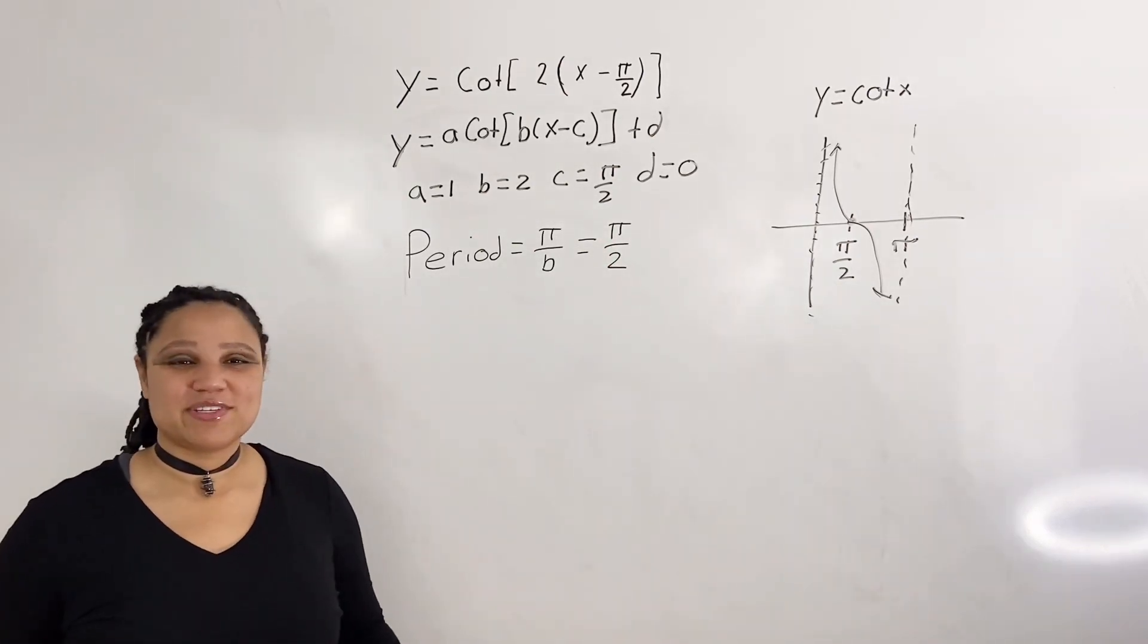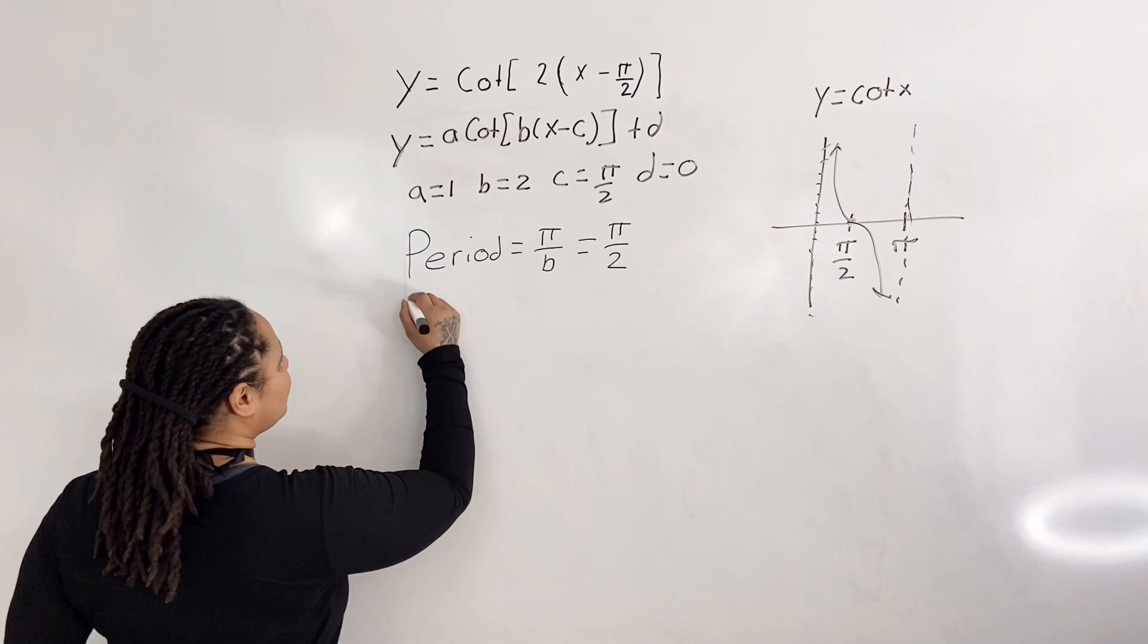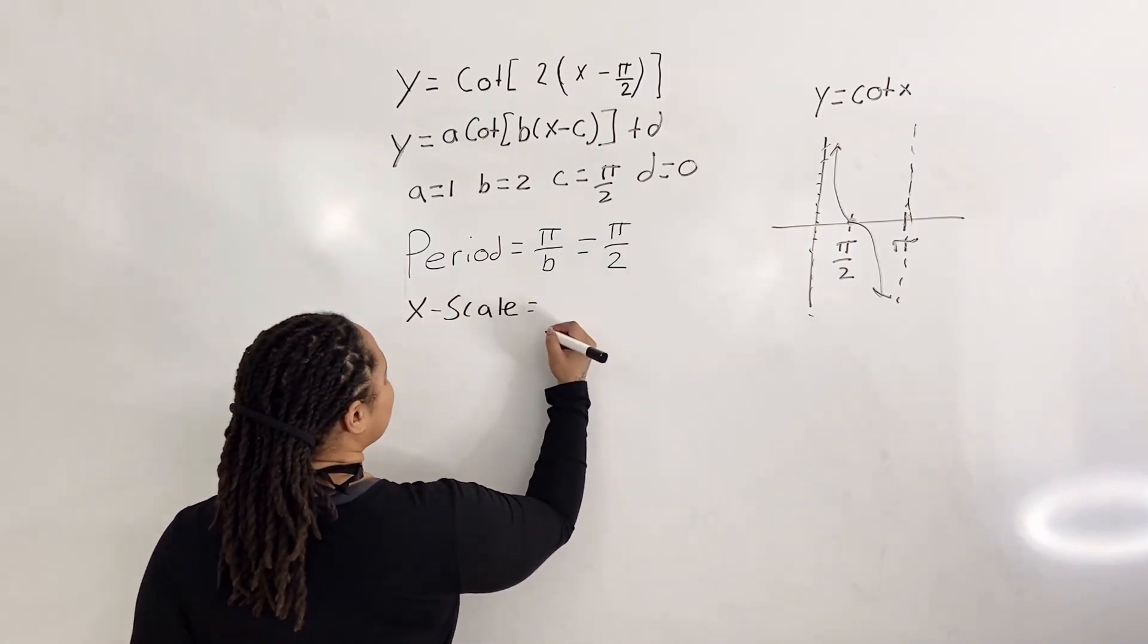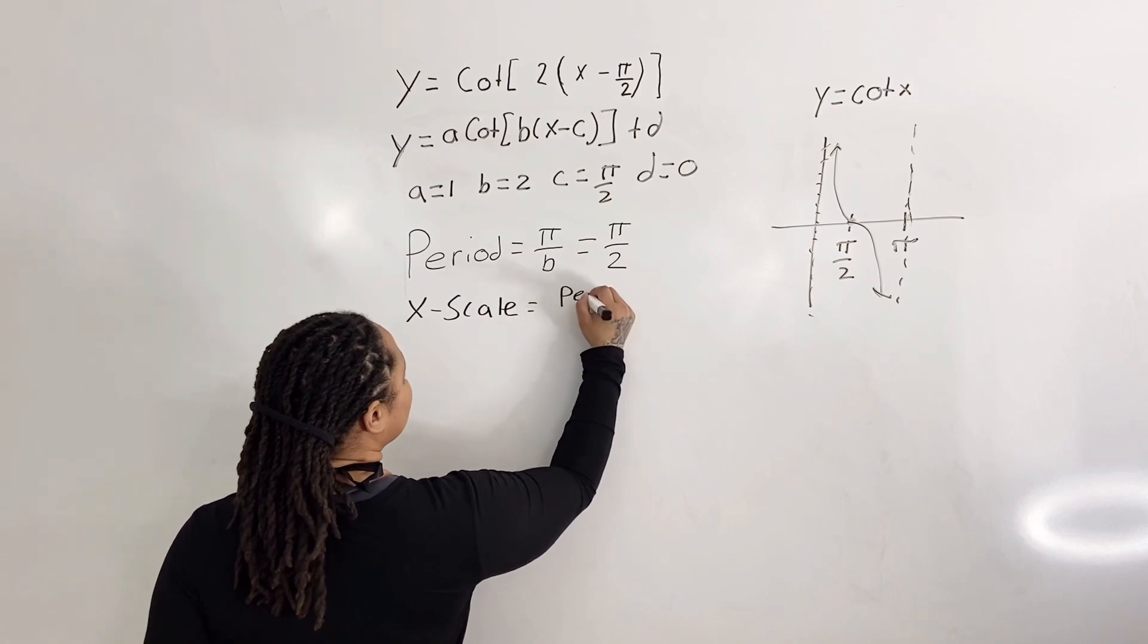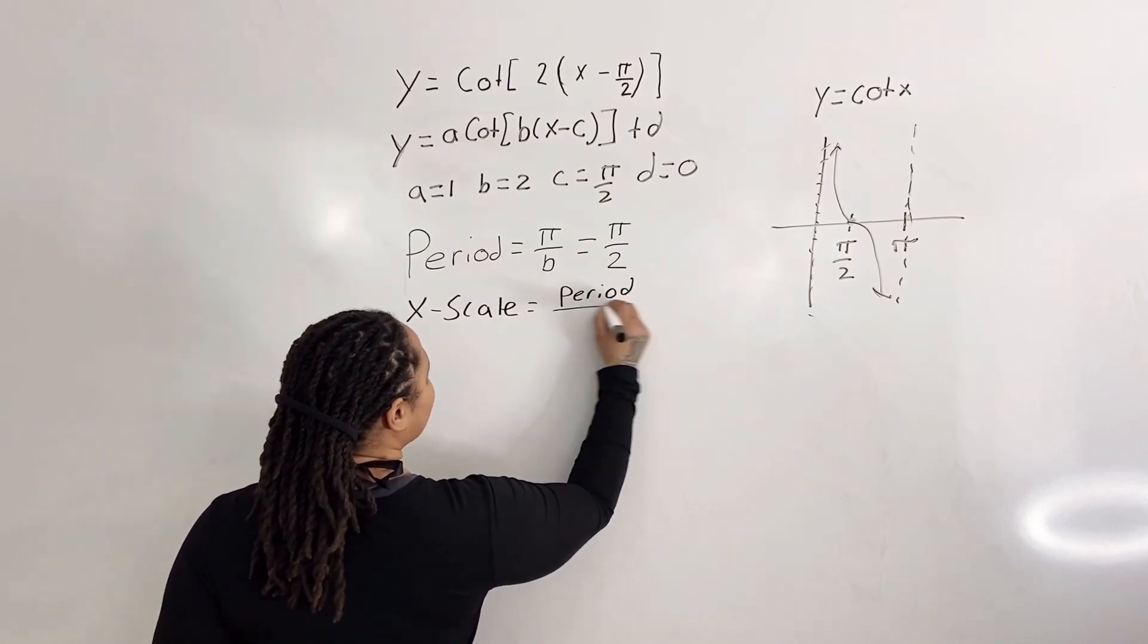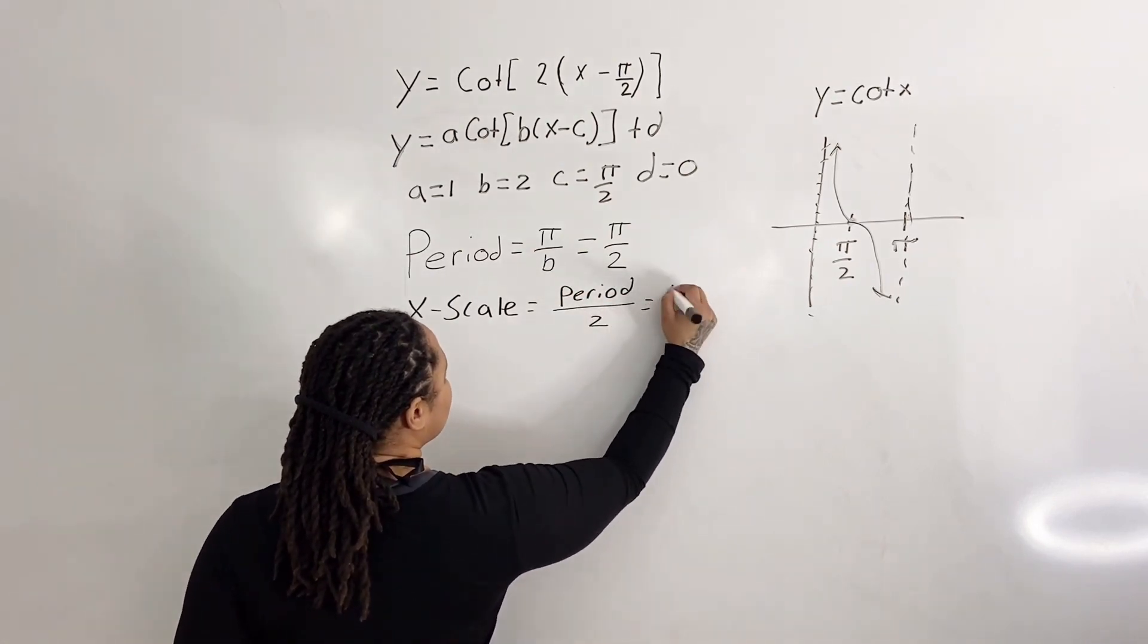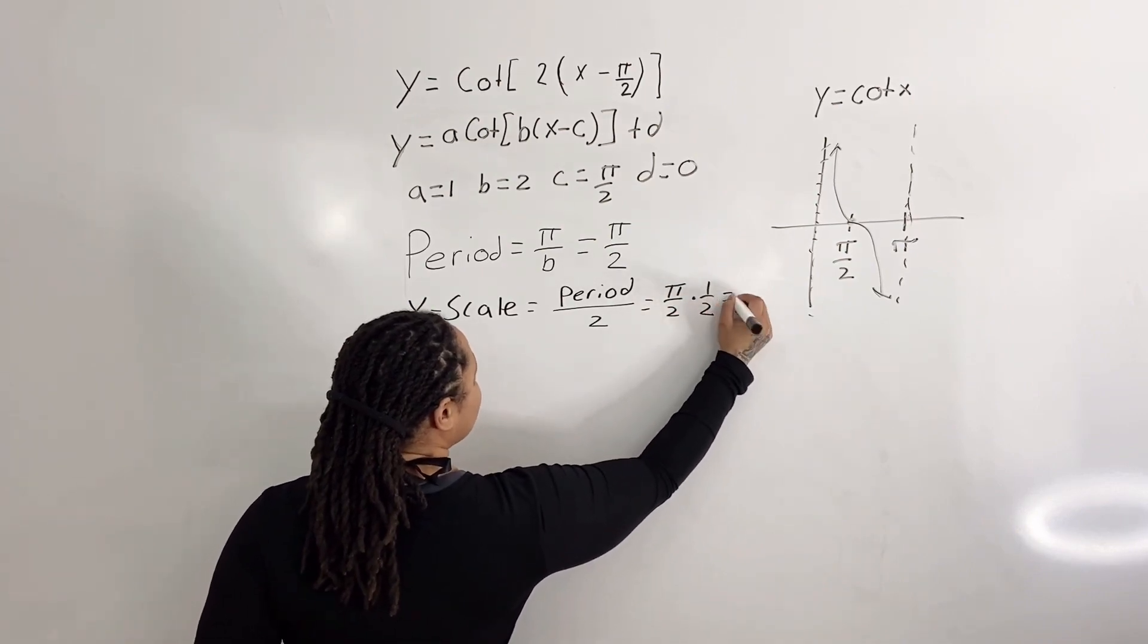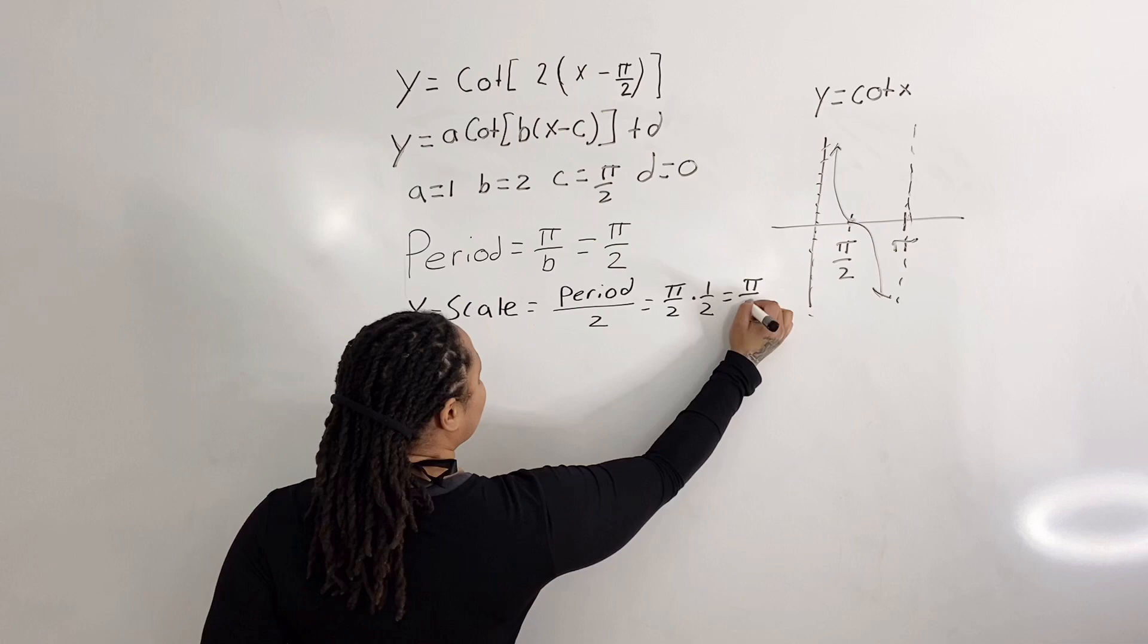Next, we need to compute the x-scale. The x-scale is equal to period over 2, which is equal to pi over 2 times 1 half, which is equal to pi over 4.